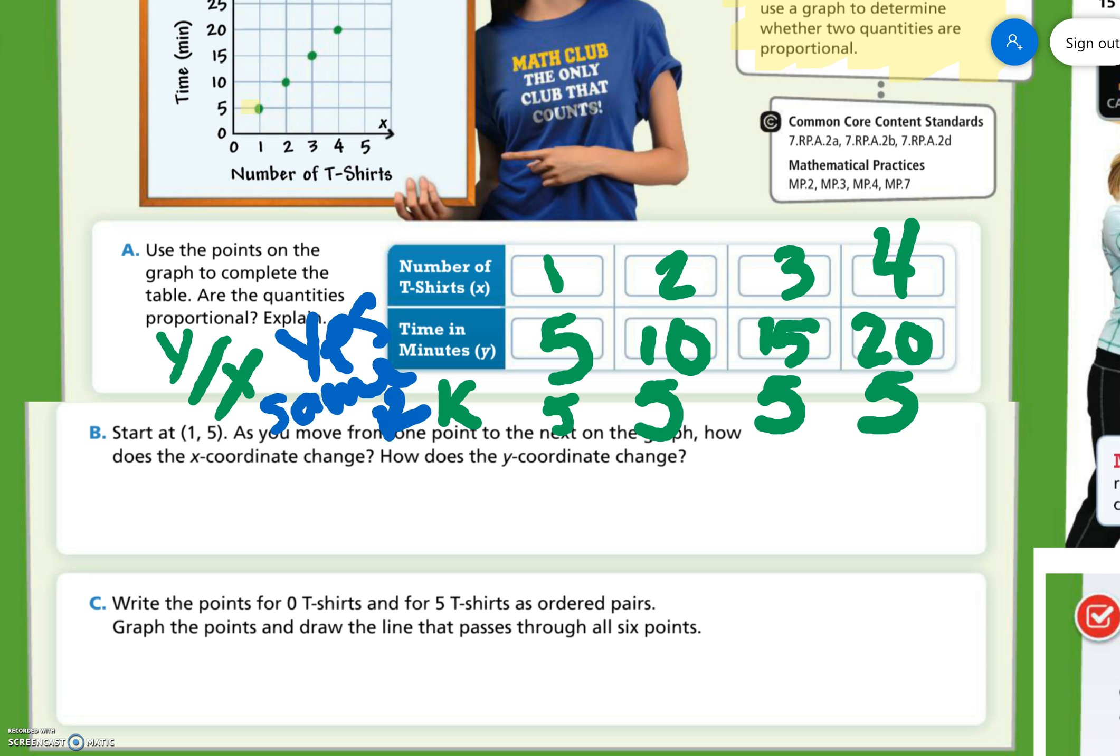Starting at (1,5), as you move from one point to the next on the graph, how does the x coordinate change? How does the y coordinate change? Well, if we look, the x adds 1 each time, and the y adds 5.